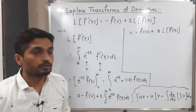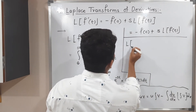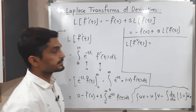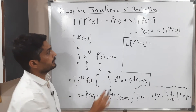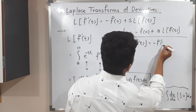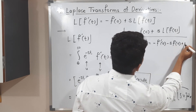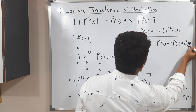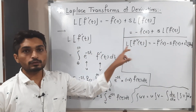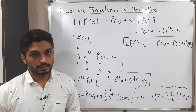We can extend this result further. Using the same result we can write L of F double dash of T. It will be: minus F dash of 0 minus S times F of 0 plus S squared times L of F of T. So when you have the Laplace of the double derivative of F, you can use this formula to find its Laplace.